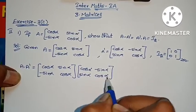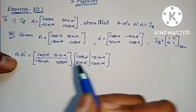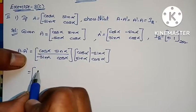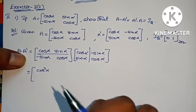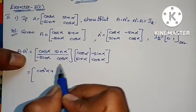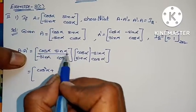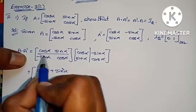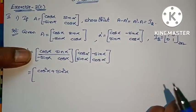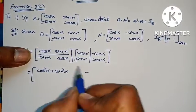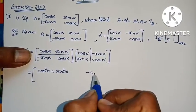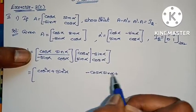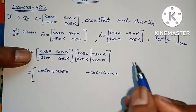First row, first column: cos α × cos α = cos²α, plus sin α × (-sin α) gives minus sin²α. First row, second column: cos α × sin α, plus sin α × cos α gives cos α sin α minus cos α sin α.